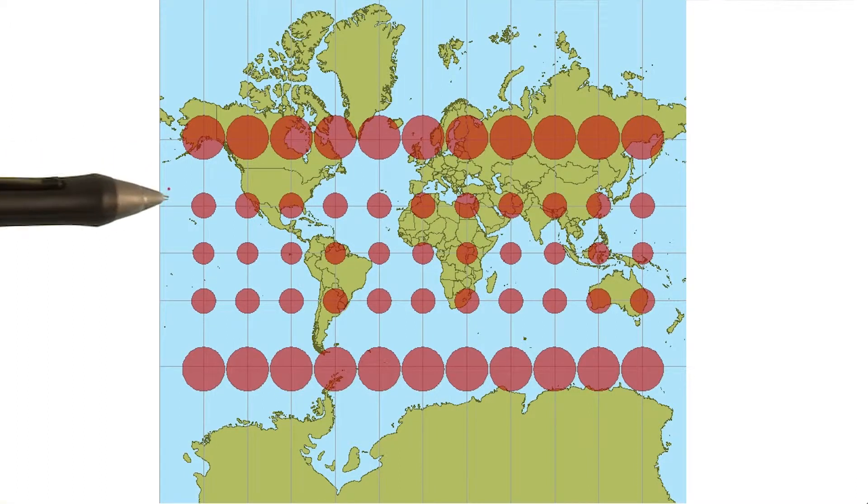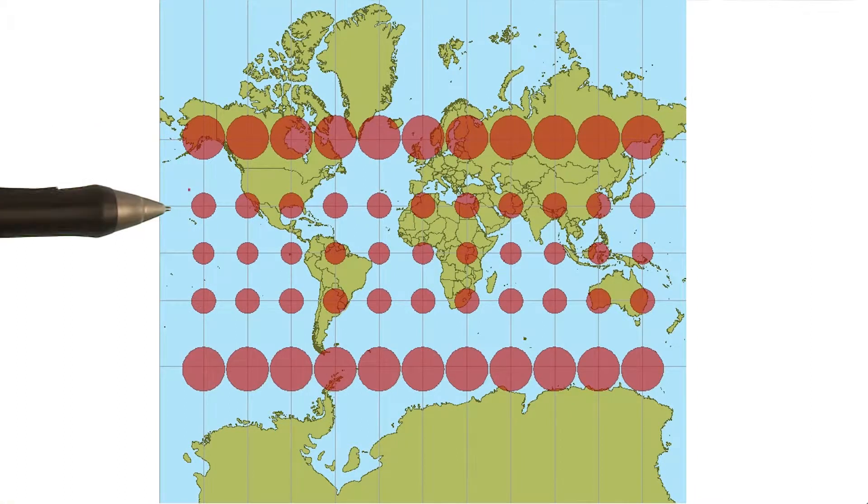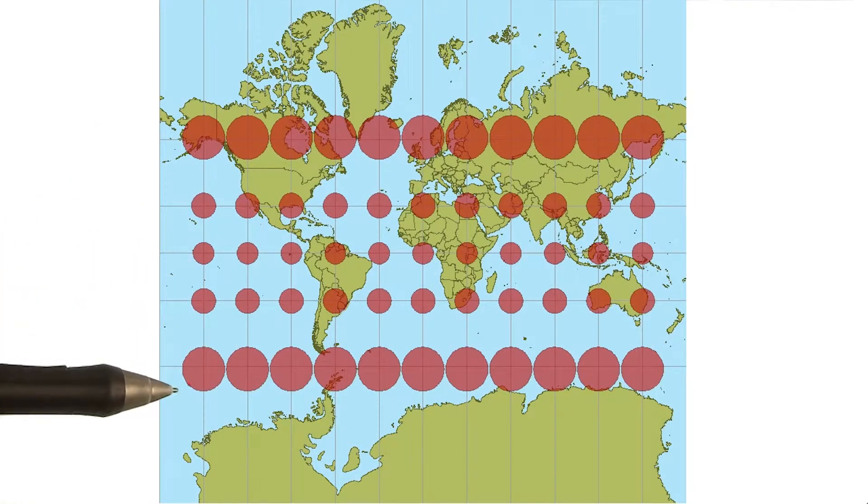And here's a map that, in addition to showing the globe, has plotted circles on the map to show the relative distortion at different latitudes.